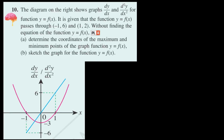Question 10. The diagram shows us the graph for dy over dx, which is the gradient, and d²y over dx², which is the concavity, for the function y equals f of x. It is given that these functions pass through the points (-1, 6) and (1, 2). Without finding the equation of the function, determine the coordinates of the maximum and minimum points.